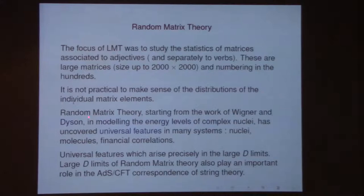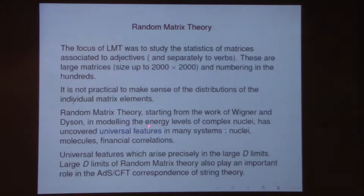Now we want to understand the nature of the statistics. You have big matrices, large numbers of entries — we don't want to look at the statistics of every single one individually. Rather, we want to use ideas from random matrix theory, which started from the work of Wigner and Dyson, who were trying to model the energy levels of complex nuclei, and uncovered some universal features in those energy level distributions.